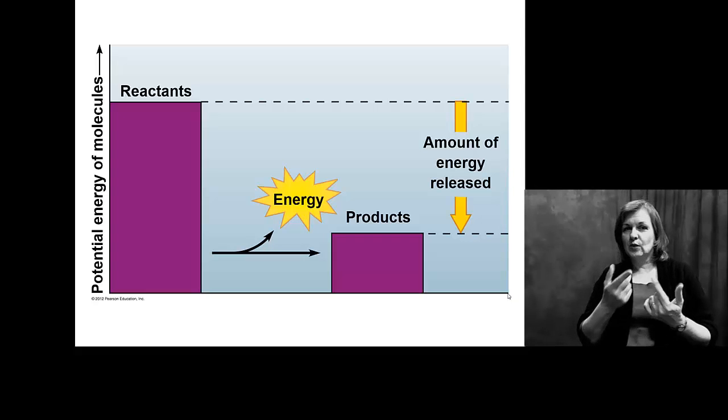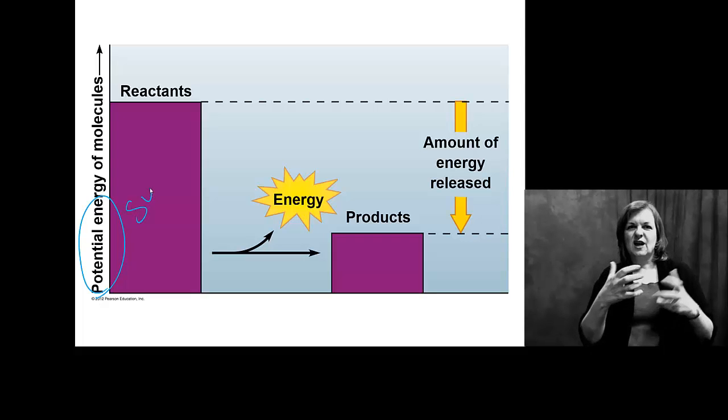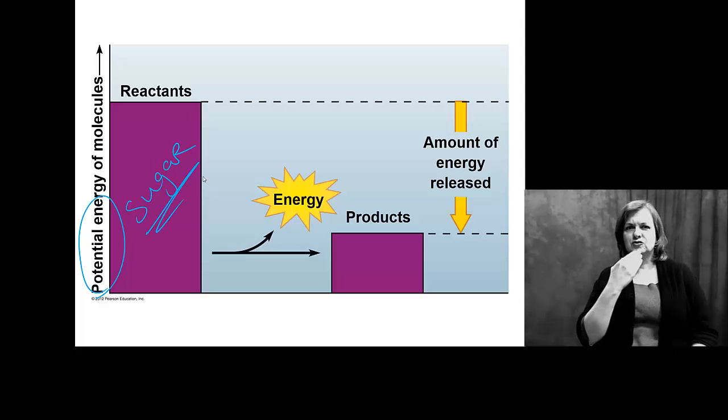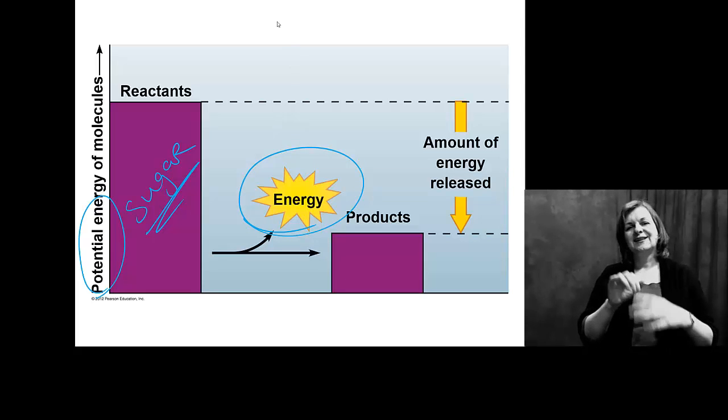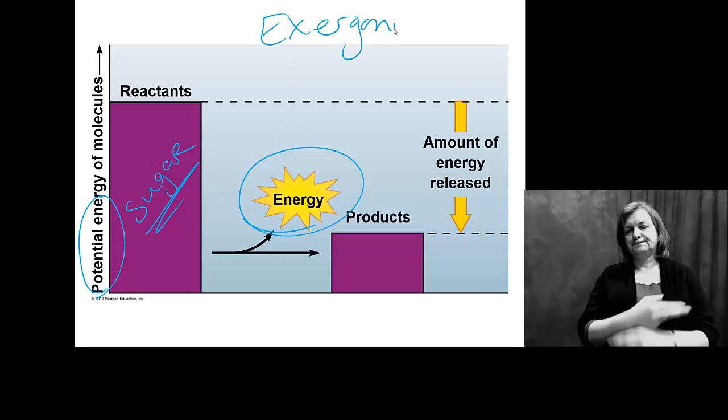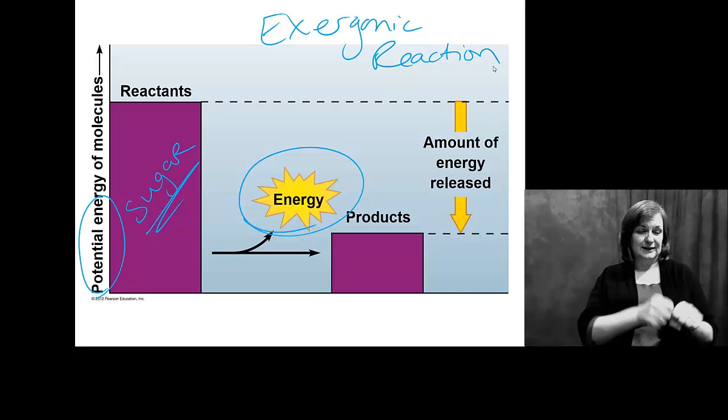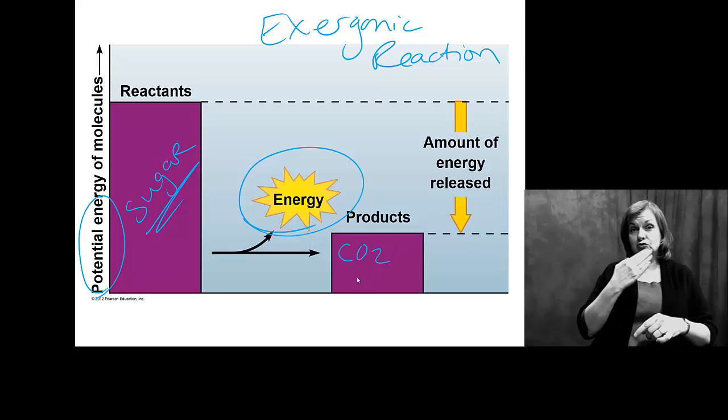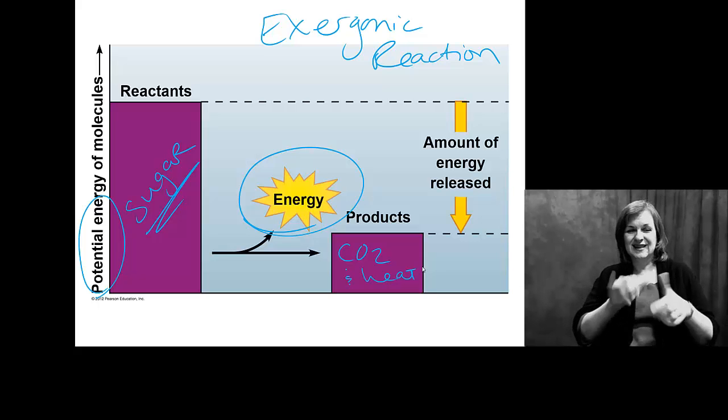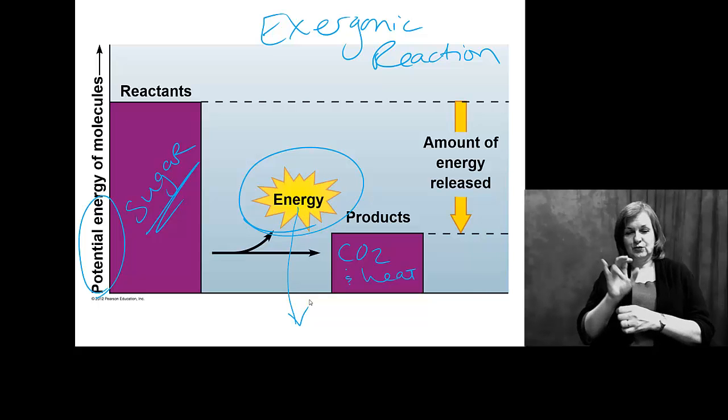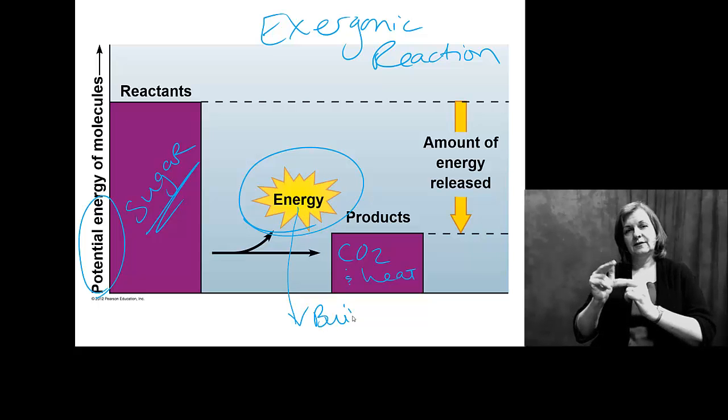So in these reactions we take something that has a lot of potential energy, sugar has a lot of potential energy. And when we start to break it down, what we're actually going to get is energy out. So this is an exergonic reaction. Energy is released and the products that we form from sugar are CO2 and heat. So the amount of energy that is released, we're actually going to take this and help to build ATP.